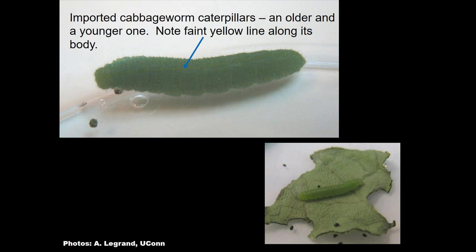It takes the butterfly only a fraction of a second to go from plant to plant depositing eggs. The more fully mature larva shows a yellow stripe running along the body, indicated by a blue arrow. The caterpillar is velvety and soft green, moving relatively slowly. Younger caterpillars appear lighter green, making the yellow stripe harder to see, but it becomes more obvious as they mature.